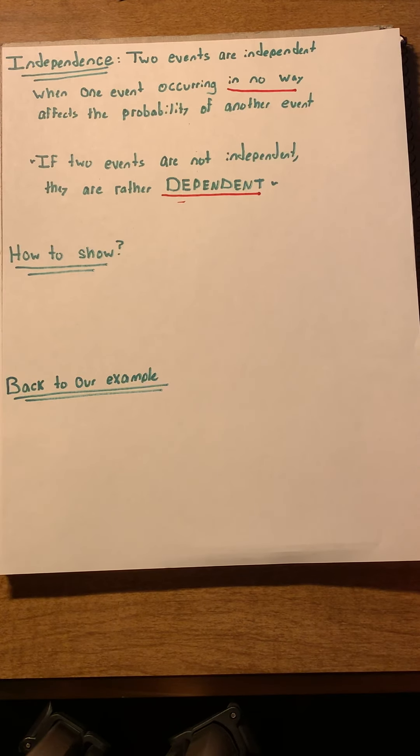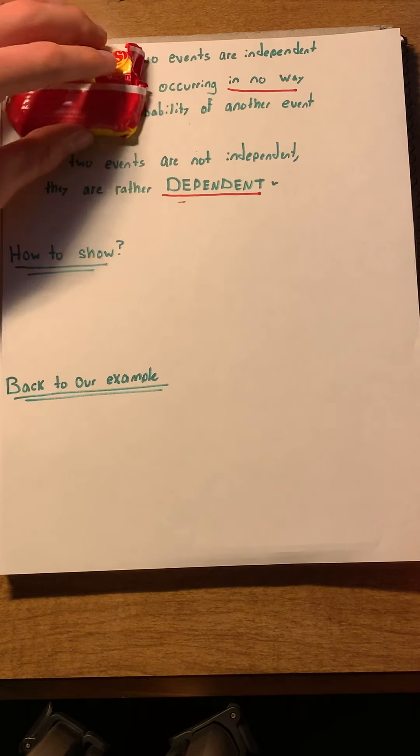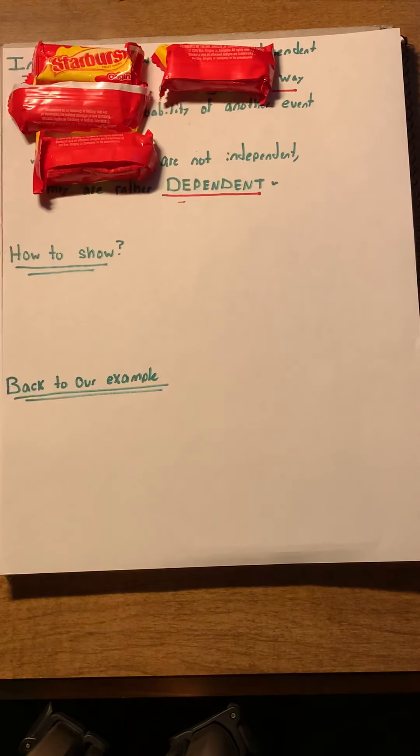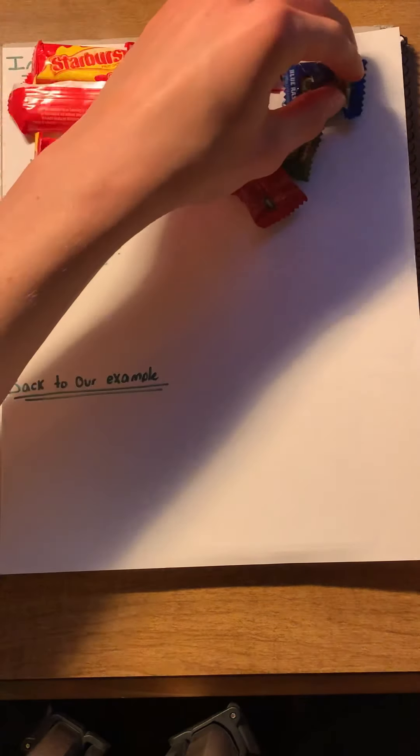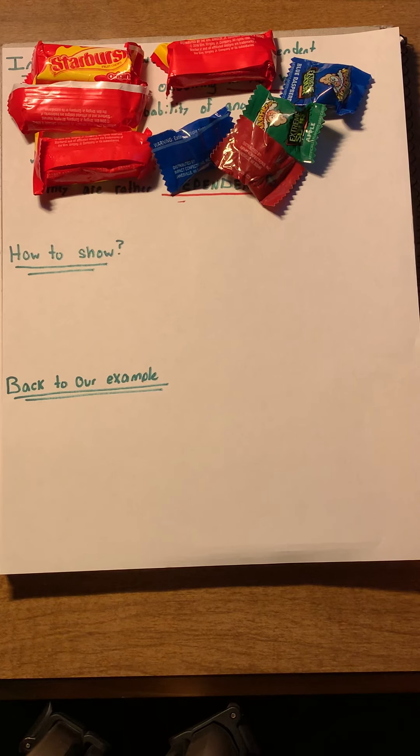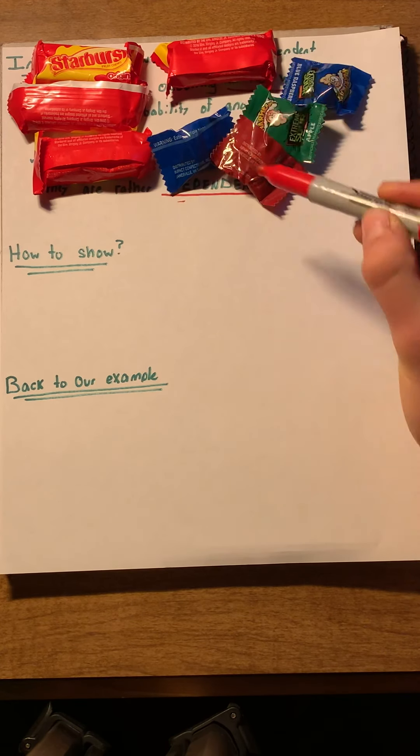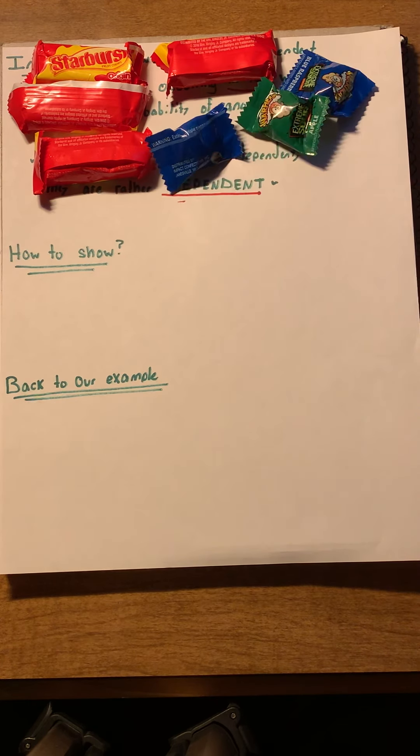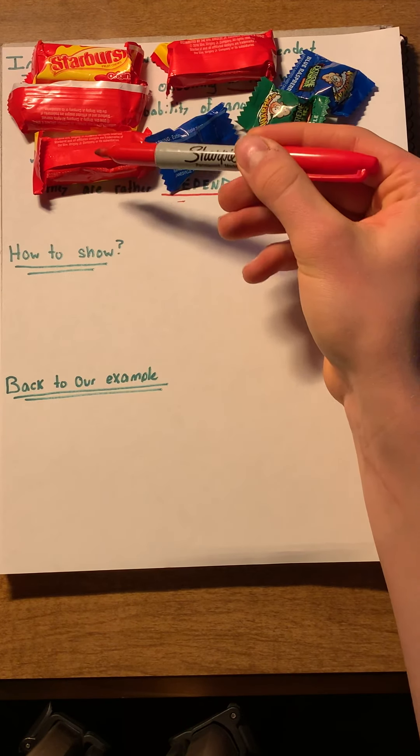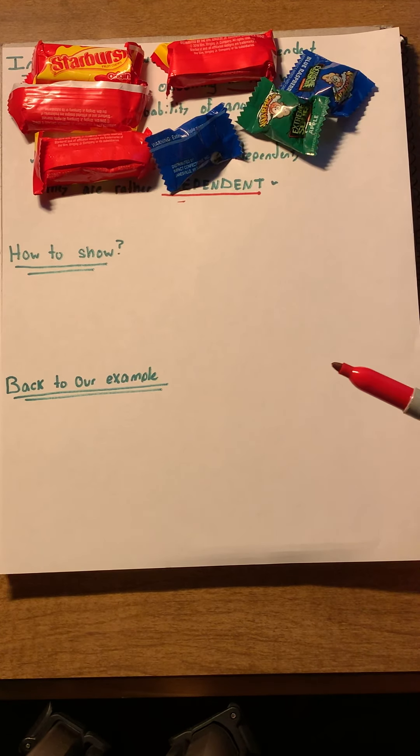So, the question is, how do we show this? Let's go back to our example again. I've got four starbursts and I have four warheads. Now, it's pretty easy for us to tell that these are not independent events. That's because, at the beginning, I have four starbursts and four warheads. So, my probability of picking either candy is one-half. However, the second that I pick a warhead out, for the next pick, my probability of picking a starburst goes up to four-sevenths. And my probability of picking a warhead goes down to three-sevenths.